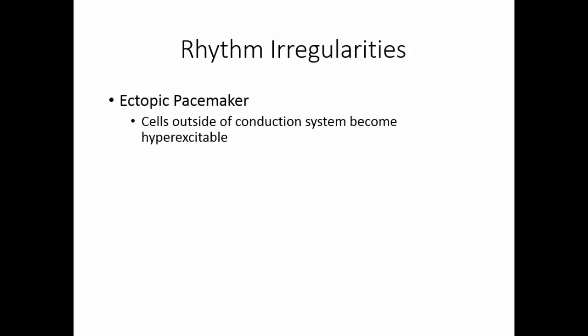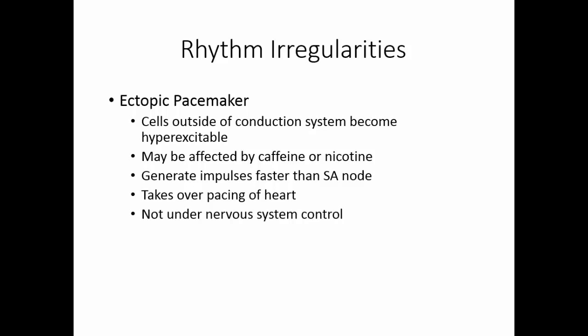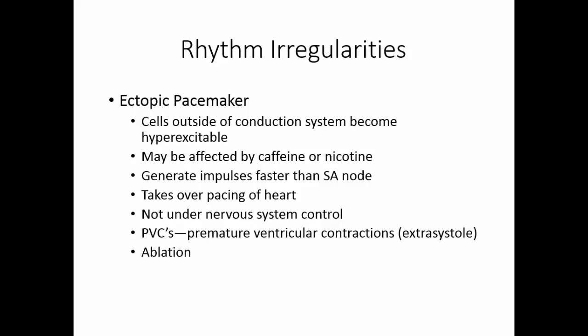Ectopic pacemakers occur when cells outside of the regular conduction system become hyper-excitable. These cells can be affected by caffeine or nicotine. If they generate impulses faster than the SA node, they will take over pacing the heart. Because they are not under any kind of nervous system control, the heart rate can go up to dangerously high levels. PVCs, or premature ventricular contractions, may occur — these are extra systoles or little extra beats of the heart. This can lead to heart attack. The treatment is to simply burn out these cells, a process known as ablation.